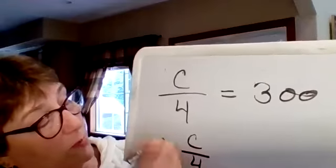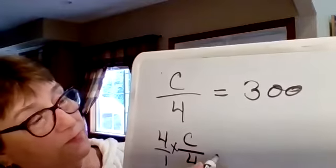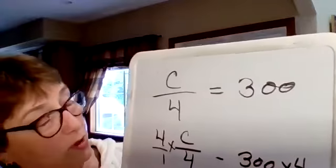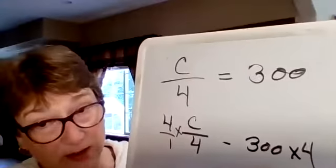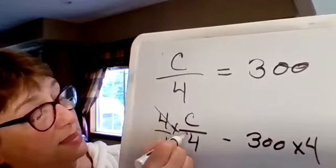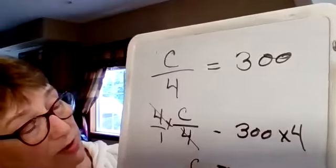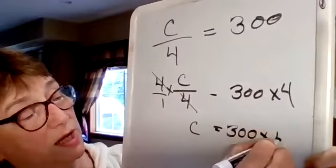c over 4, and we're going to multiply it times 4. And we can always put that over 1. That will equal 300 times 4. Because if you do it on this side of the equal sign, you have to do it on the other side of the equal sign. We can cross these off. That leaves us with c equals 300 times 4.